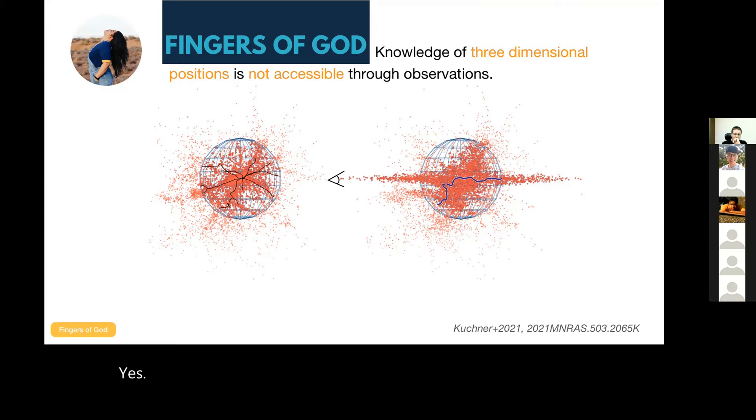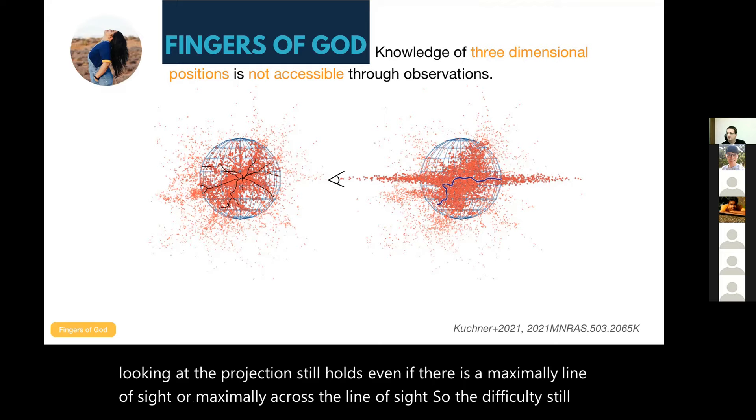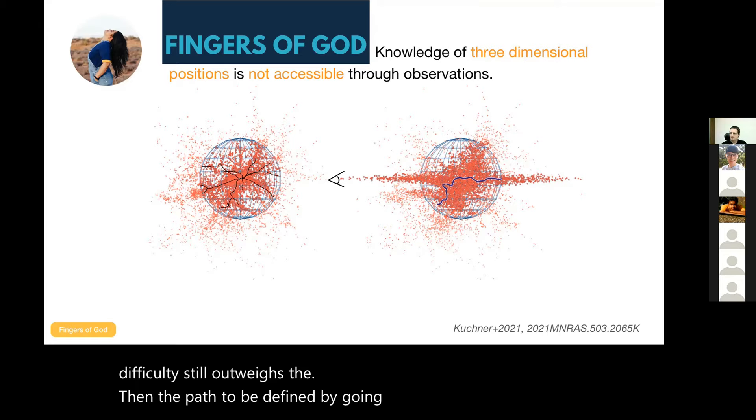Yes. So there is still an effect and we did check that in an appendix of our paper. Our ultimate conclusion, which was that we will always do better by just really defining the volume and then looking at the projection, still holds even if there's maximally line of sight or maximally across the line of sight. The difficulty still outweighs the path that we defined by going 2D projection. I see. And if I've got time, just one last quick question. I was wondering if you'd investigated kind of alternative ways of measuring the distance there in our line of sight. For example, rather than relying just on the redshift, maybe there could be alternative approaches, surface brightness fluctuations or... Yeah, we haven't.